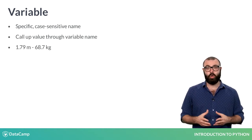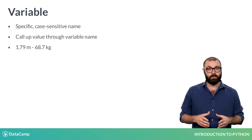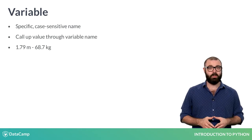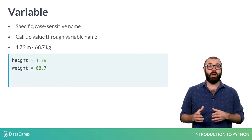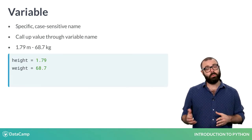Suppose you measure your height and weight in metric units. You're 1.79 meters tall and weigh 68.7 kilograms. You can assign these values to two variables named height and weight with an equals sign.